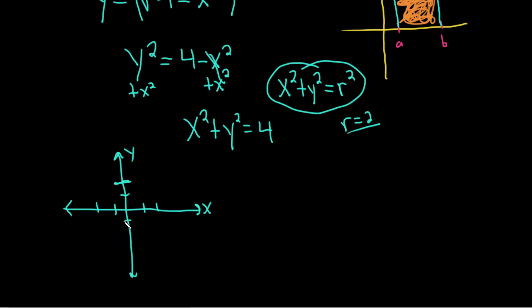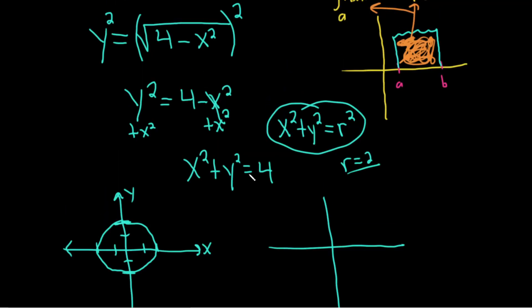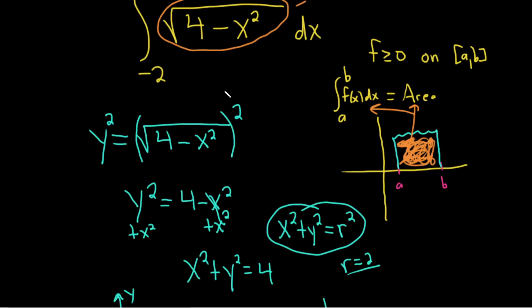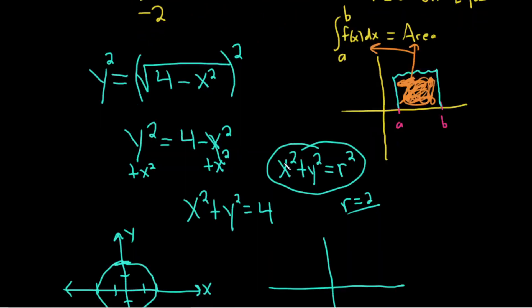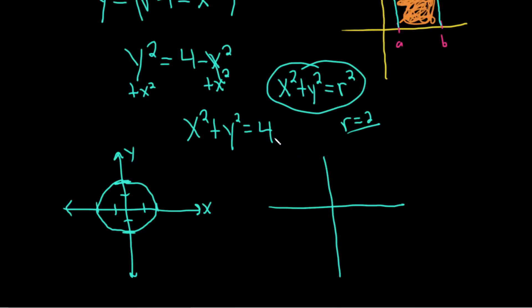But the thing is, I'm going to go ahead and draw my circle. The thing is, we only care about what's happening between negative two and two, right? And so we're only looking at this piece here, which is basically the top half of the circle. So this would be the top half of a circle. So we're looking at the area of the top half of a circle. In other words, the area of half of the circle.